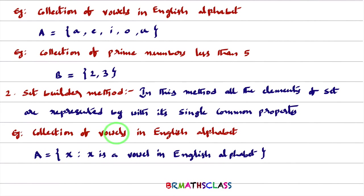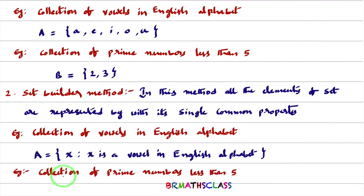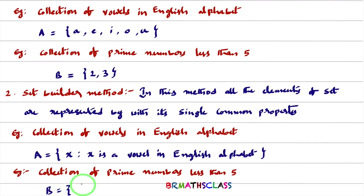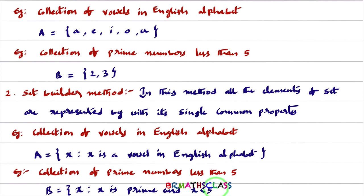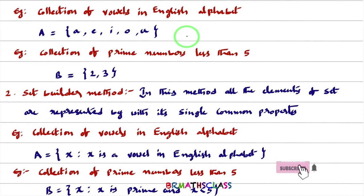Similarly, for the collection of prime numbers less than 5: in roster method it is {2, 3}, and in set builder method we represent all elements with their common property as: {x : x is a prime number and x is less than 5}. In this way, we represent a set in both methods.